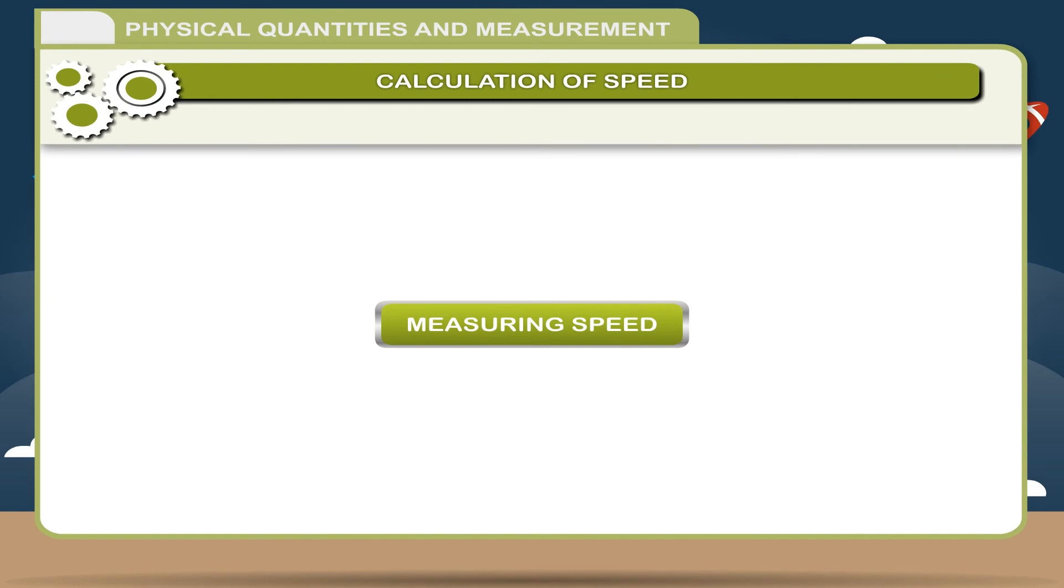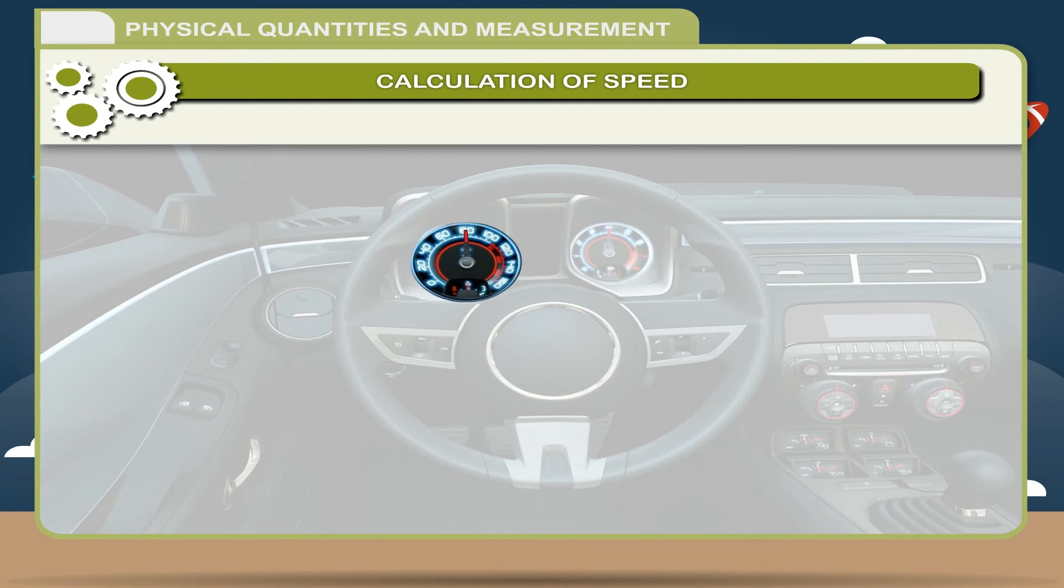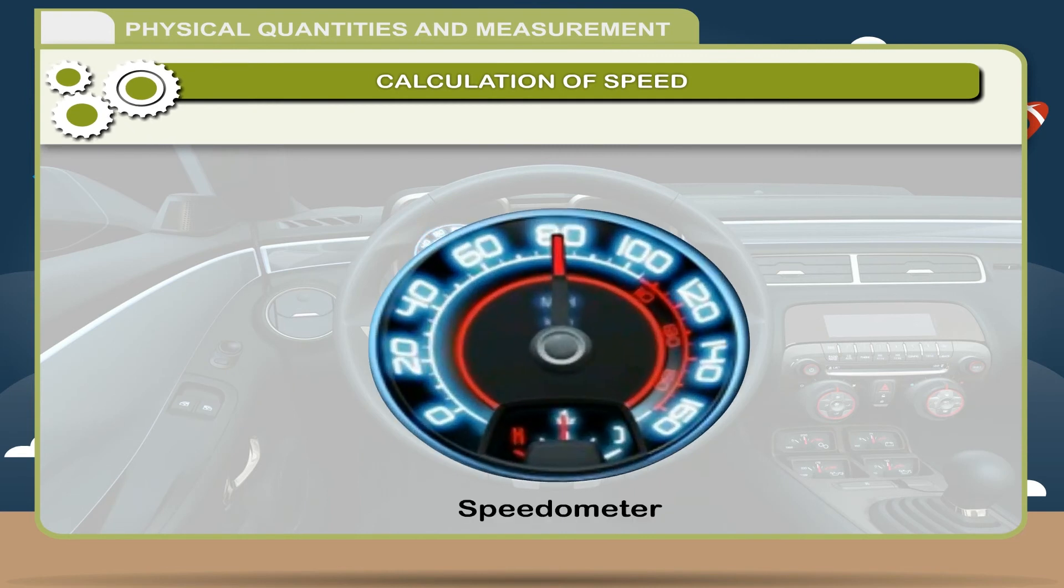Measuring speed: If you are inside a vehicle, say a car, you can easily find out how fast you are traveling. A car has a speedometer in the dashboard to tell the driver how fast it is traveling. The speedometer gives the speed in kilometer per hour.